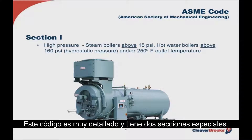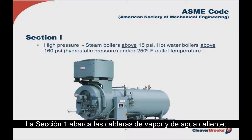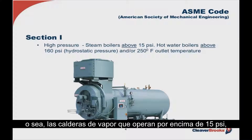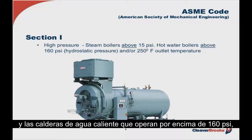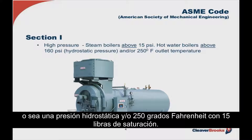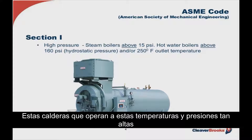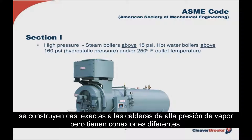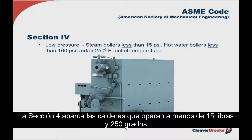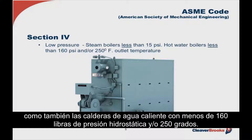This ASME code is very detailed and breaks down into two major sections. Section 1 covers steam and hot water boilers — steam boilers operating above 15 PSI or 250 degrees Fahrenheit, and hot water boilers above 160 pounds hydrostatic head or above 250 degrees. These hot water boilers operating at elevated pressures and temperatures are considered high-temperature hot water boilers and are built almost exactly like a high-pressure steam boiler, except for differences in connections.